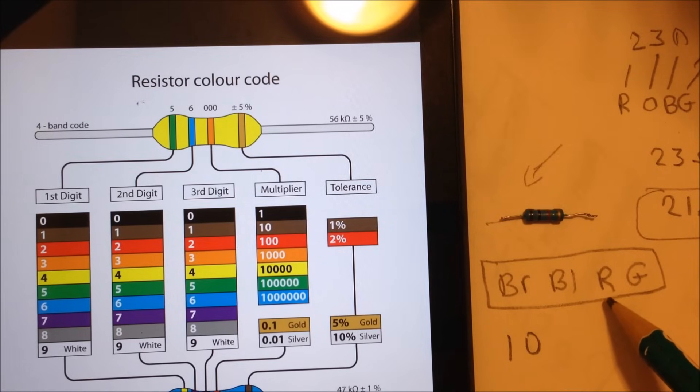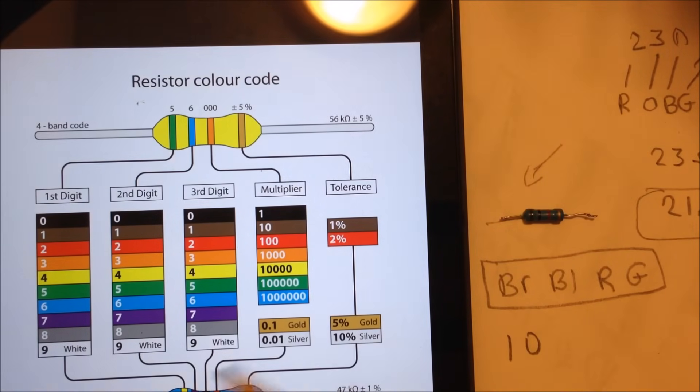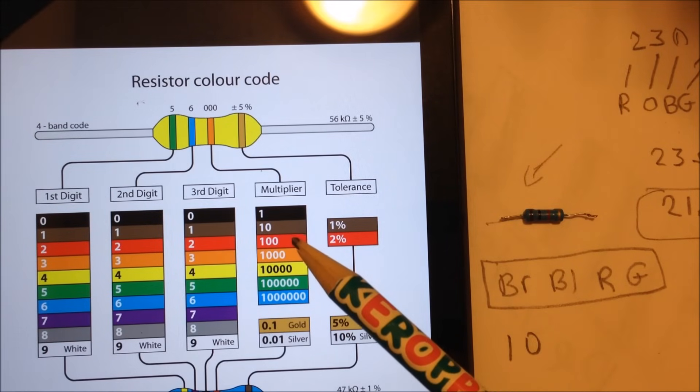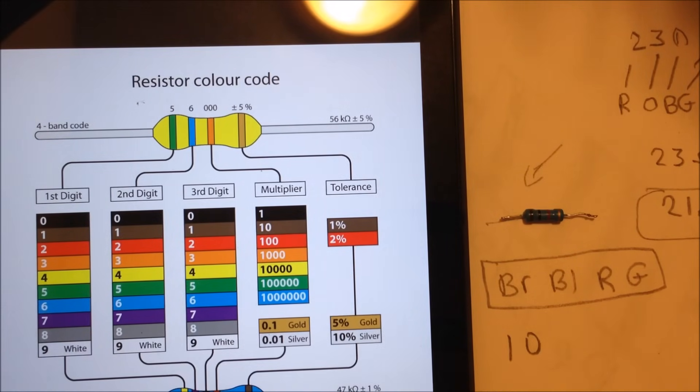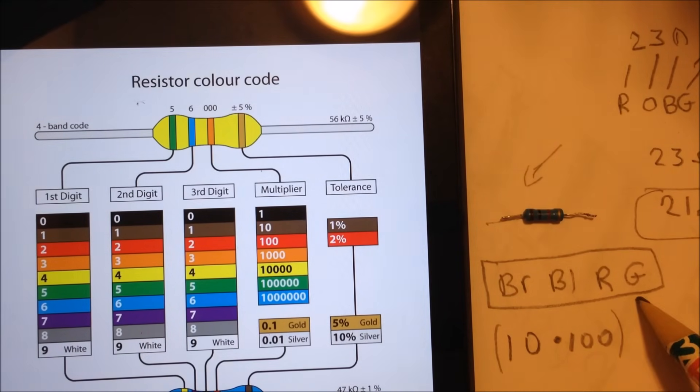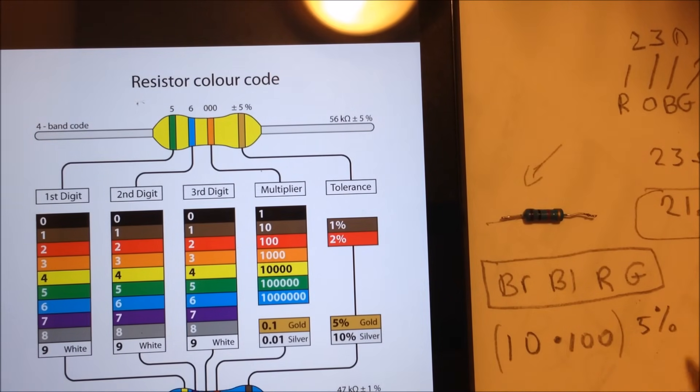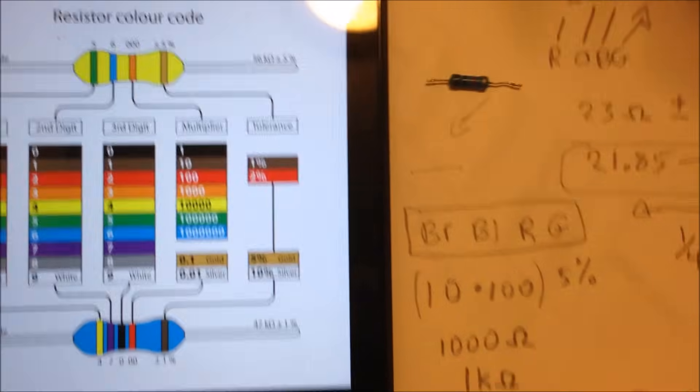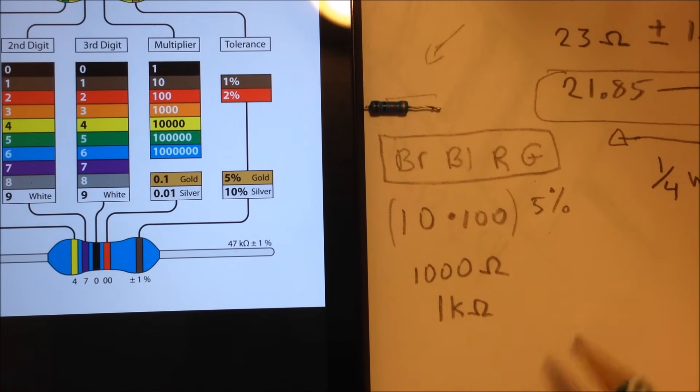So if we go back to our chart here, we have brown, which is one, we have black, which is zero, and we have the third value here is red. And the red multiplier is times 100. So we take that value here, multiply it by 100. So that takes care of that. And then we have our gold here, which is still 5%. So that would be a multiplier of 5%. So if we multiply that out, 10 times 100 is 1,000 ohms or 1K ohm. But it's 5%.